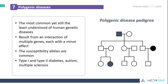Polygenic diseases are the most common, yet still the least understood, form of human genetic diseases. They result from an interaction of multiple genes, each with a minor effect on the general presentation. The susceptibility alleles are common. Examples of polygenic diseases include diabetes mellitus type 1 and 2, multiple sclerosis, and autism spectrum disorders.